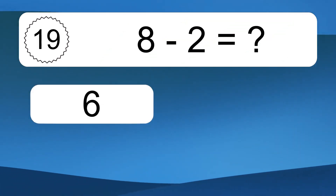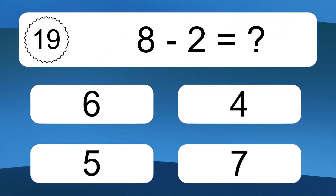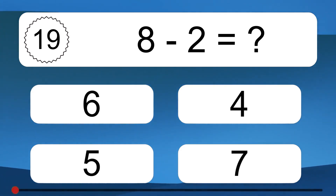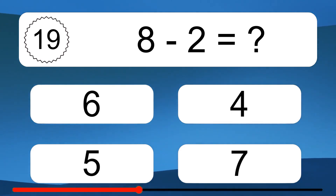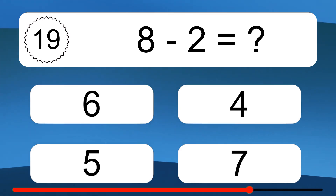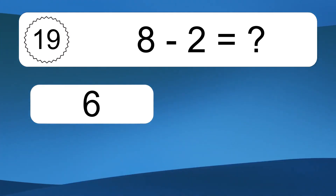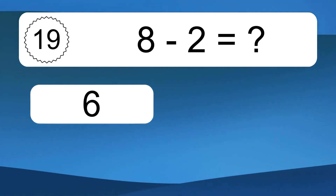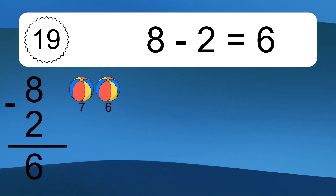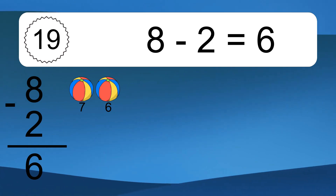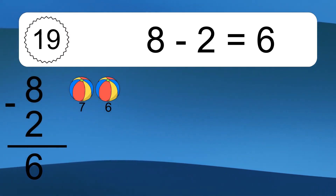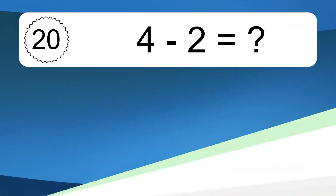8 minus 2 equals what? 8 minus 2 equals 6. Let's count it. 7, 6.